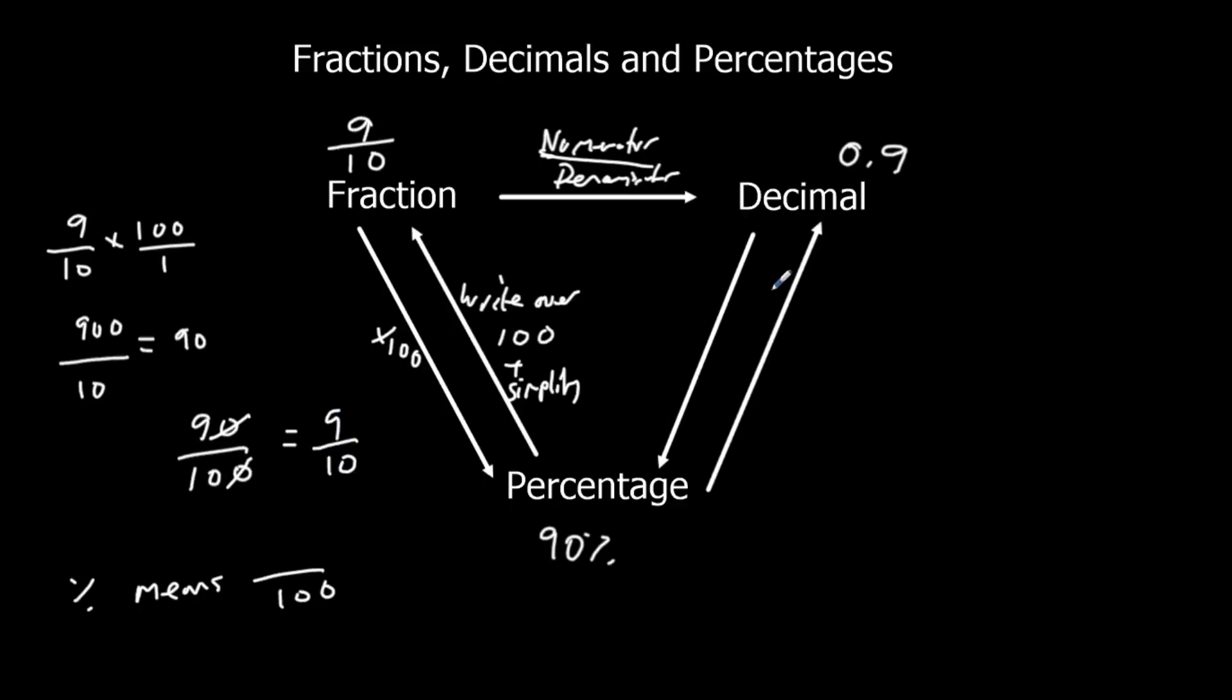A decimal to a percentage, that's times by 100. So 0.9 times 100, 0.9 times 10 once is 9, times again, so 90. And percentage to decimal is divide by 100. So 90 divided by 10 is 9, divide by 10 again, 0.9. So that's how we work this.